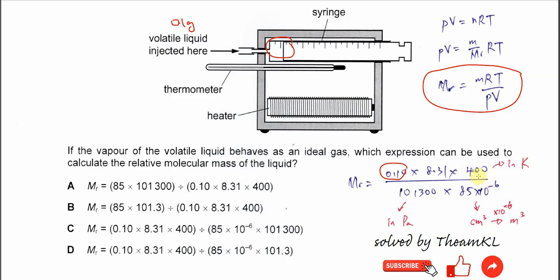So in order to use this combined gas law, the temperature must be in Kelvin, the pressure must be in Pascal, and the volume must be in meter cube. So here the T is 400 over 101300. This is the Pascal given, and from cm³ we need to convert to meter cube.